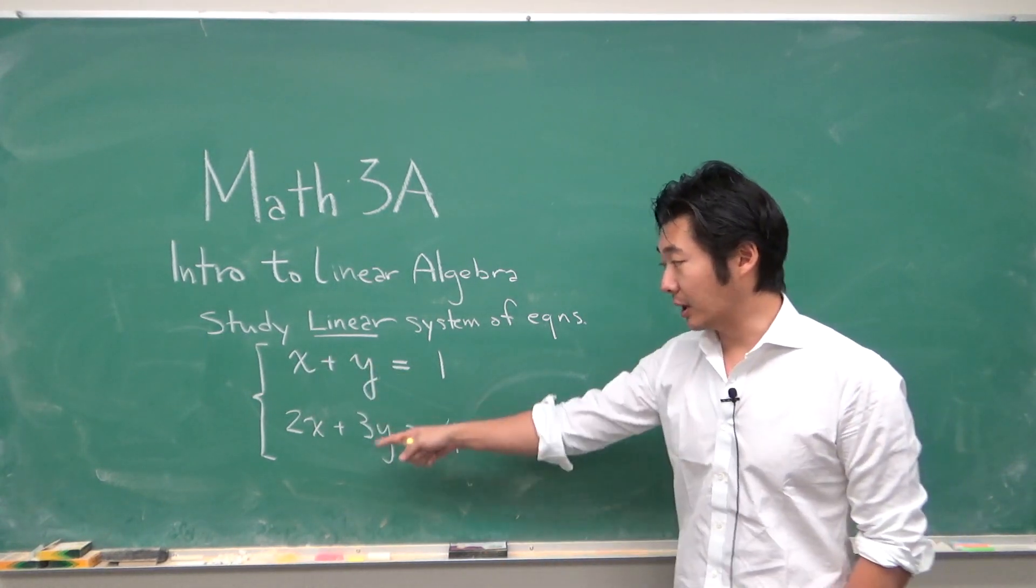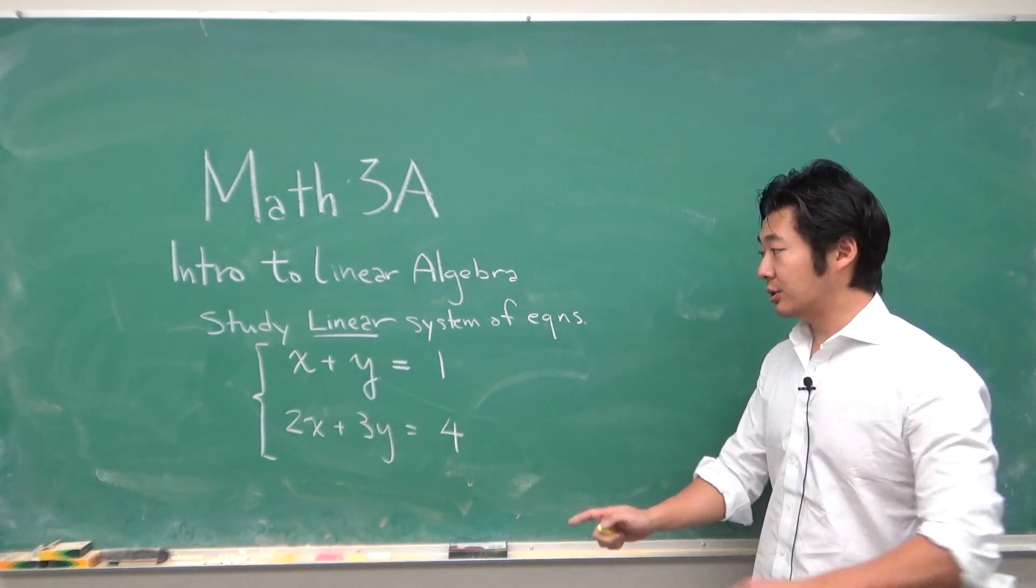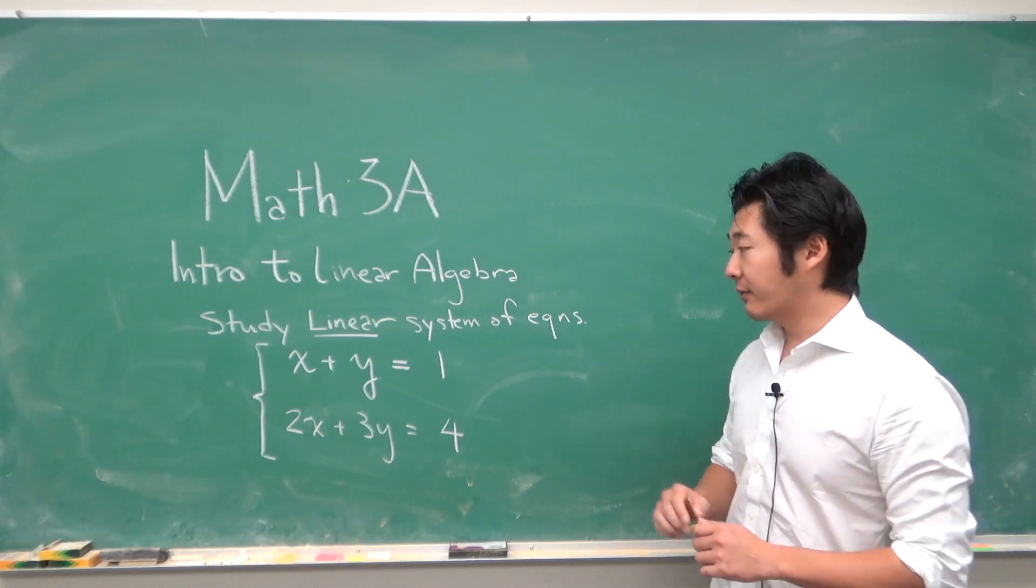So the power here is 1 for all of them, and a solution to this system is something for x and y that satisfies both equations at the same time.